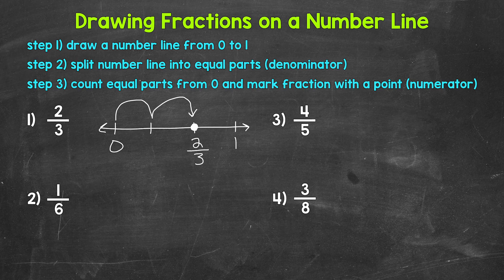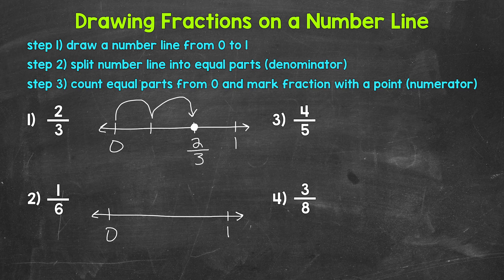We have one sixth. First, let's draw our number line from zero to one. One sixth is going to be somewhere in between zero and one. Now we need to split the number line into equal parts. Our denominator is six, so we need six in total: one, two, three, four, five, and six.